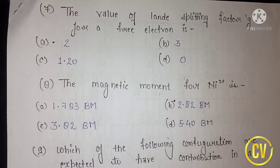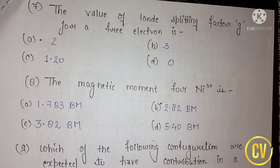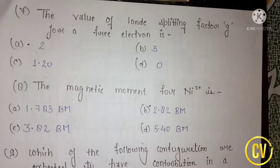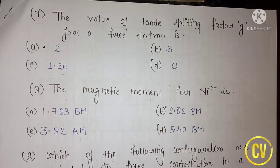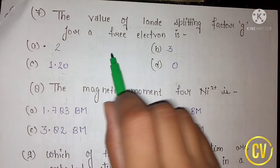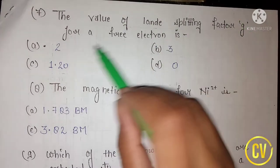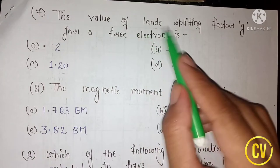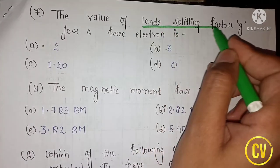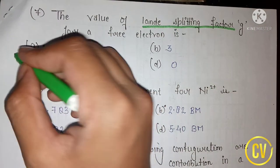The next question asks for the value of the Landé splitting factor. We denote it by G. For a free electron, the value of the Landé splitting factor is always 2.